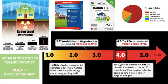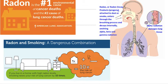4 pCi/L is the equivalent of 100 chest x-rays — and most hospitals will only allow a person to have 4 chest x-rays in a year, which gives you a sense of the scale. Radon is the number one environmental cause of cancer deaths and the number two cause of all lung cancer deaths. Because it affects the lungs so much, it's an especially dangerous combination if you're exposed to high radon levels and you smoke — that can increase your risk of lung cancer by 10%, which is a pretty big deal.